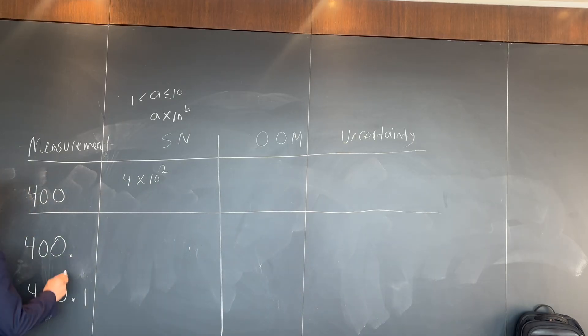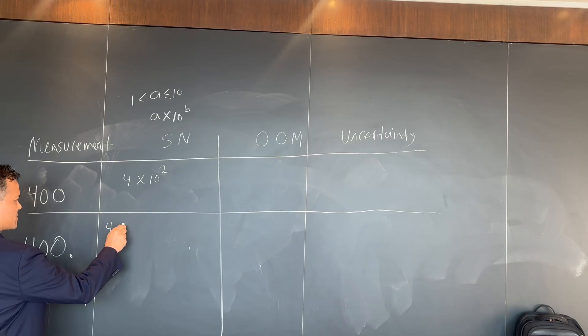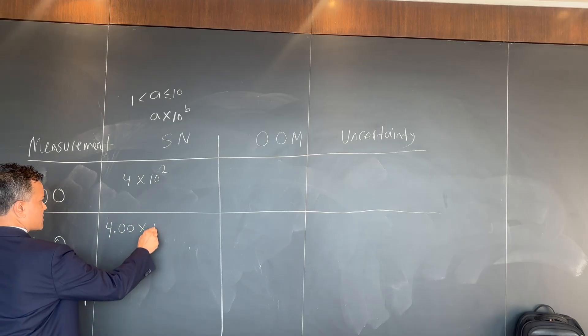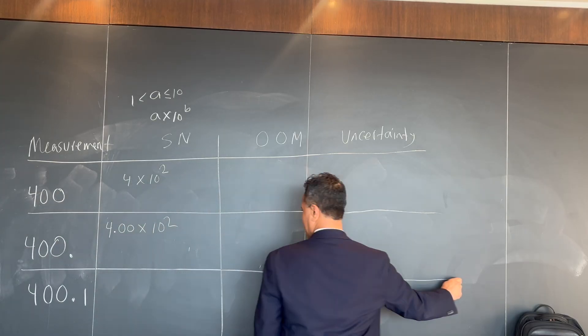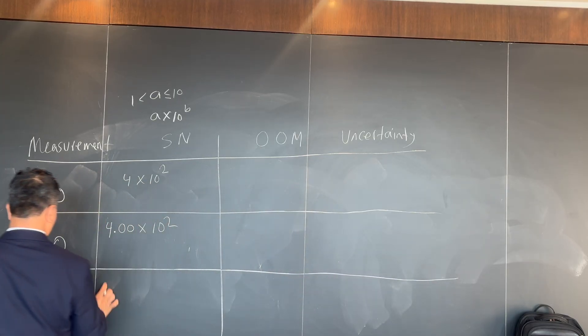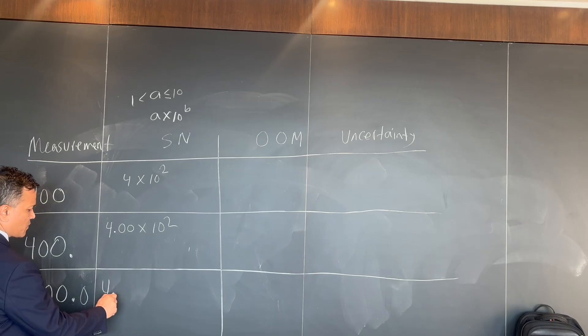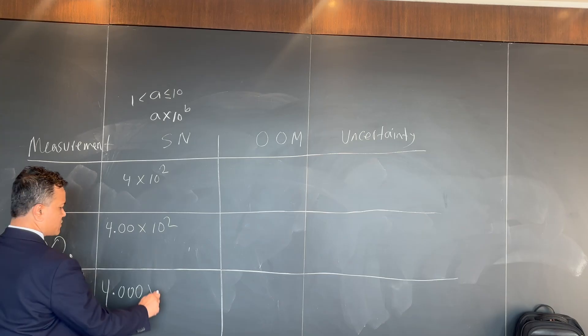All right, so since there is a decimal over here, be careful. 4.00 times ten raised to two. This is actually zero. So since there is a zero after the decimal, we have to be careful. For decimal: one, two, three, zero times ten raised to two.